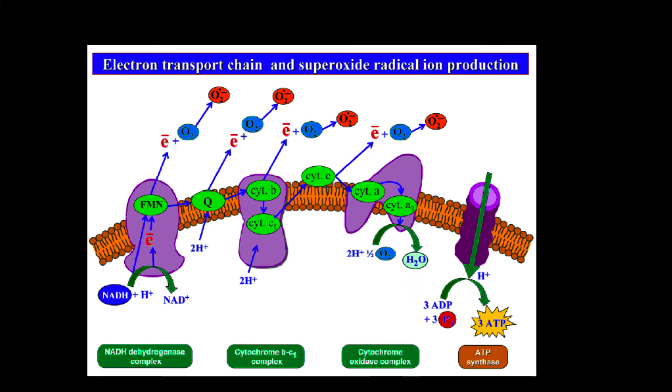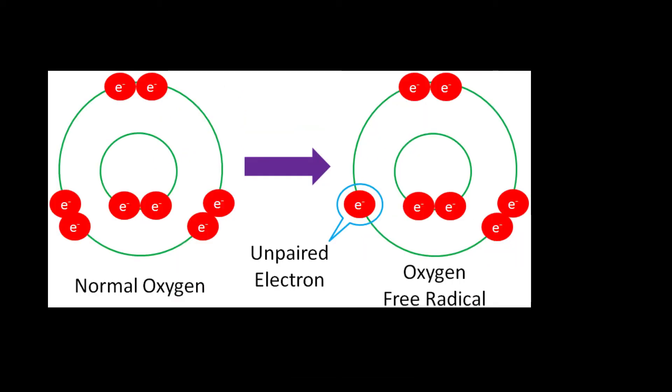However, a very small percentage of the electrons passing through the chain are prematurely and incompletely reduced to the superoxide radical. The superoxide radical has an unpaired electron in its outer or valence shell. This unpaired electron makes it very reactive. It wants to steal electrons to fill its valence shell.